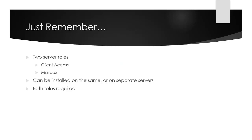To keep things simple: remember there are two server roles — Client Access and Mailbox. They can be installed on the same server, as in this example, or on separate servers, but both roles are required in the Exchange organization. You need at least one of each for everything to function. Next, we'll move on to more detailed configuration and look at SSL certificates in the next lesson.